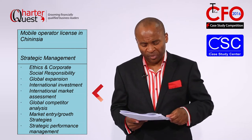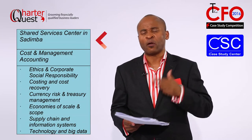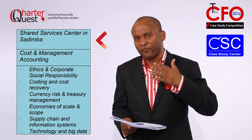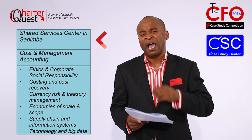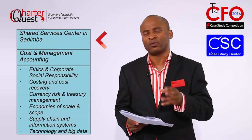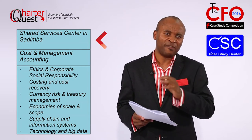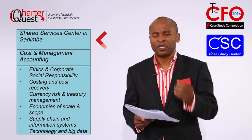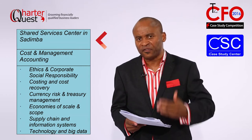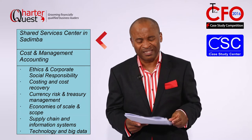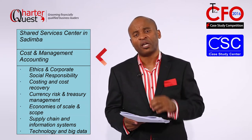The third issue is called 'Shared Services Centre in Sadimba.' Emcom is faced with serious cost control challenges and has been looking at ways to reform its operating models and save costs. They responded by creating a Shared Services Centre at their headquarters in Sadimba, but now face backlashes across all markets — concerns that this is cutting jobs in other markets and creating jobs only in Sadimba. Shareholders want to know the savings achieved and whether the strategic decision needs to be reviewed.